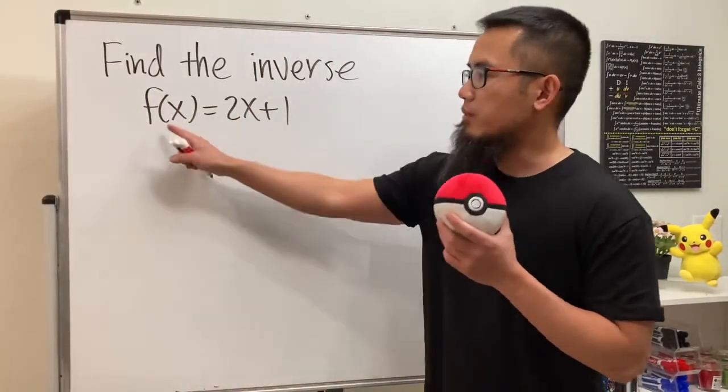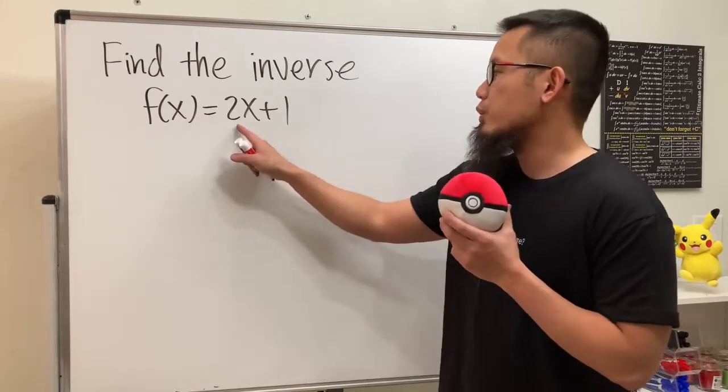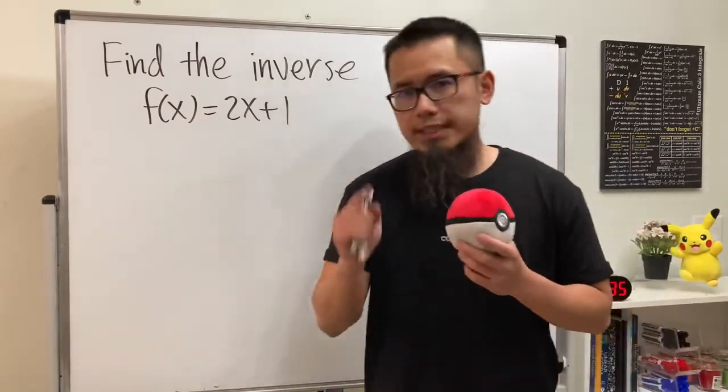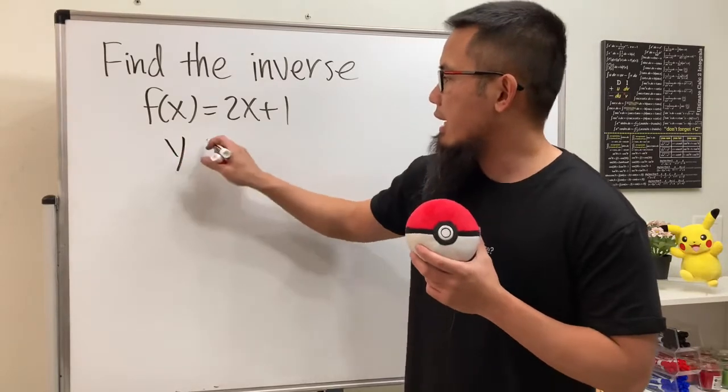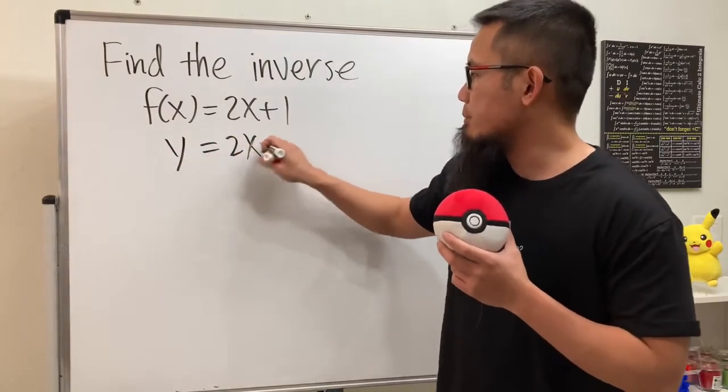Okay, here we are going to find the inverse for the function f(x) equals 2x plus 1. So step 1, we are going to write f(x) as y, and that's equal to 2x plus 1.